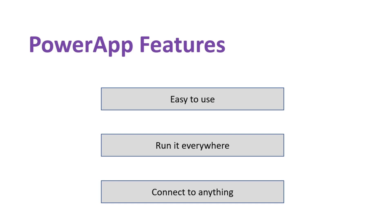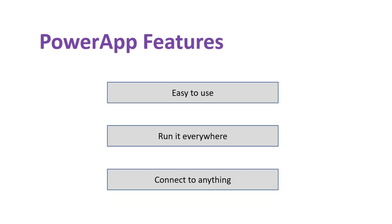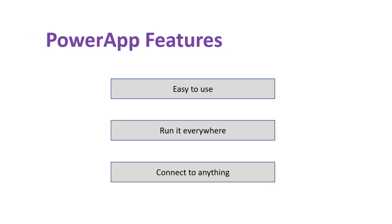Thirdly, you can connect to anything. These types of applications require lots of data because whenever you have any business-related application, it's usually about manipulating, adding, or editing data. Power Apps allows you to connect to any source of data — not just OneDrive, not just Azure, not just Microsoft-related — but any source of data: Google Drives, SQL Servers, Redshift, Amazon, anything. Microsoft Power Apps has connectors to it and makes it so easy. Once we get started, you'll see how easy it is to connect to your OneDrive Excel file or your SQL Server.